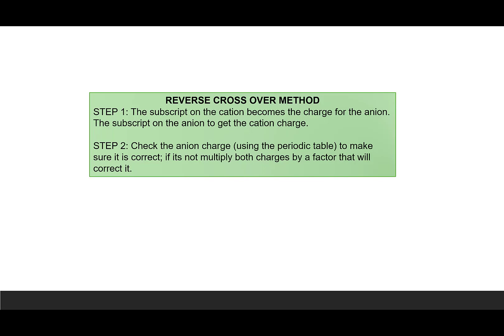In order to do that, we're going to do the reverse of the crossover method. Given the formula, we're going to reverse that process so that we can write down the anions and cations. There is going to be an extra step where we check our work. Let's look at some examples.